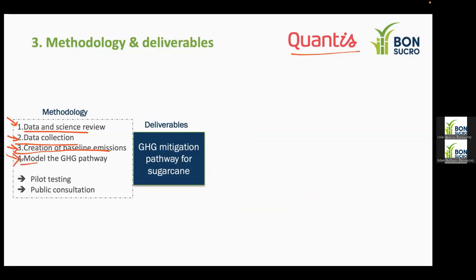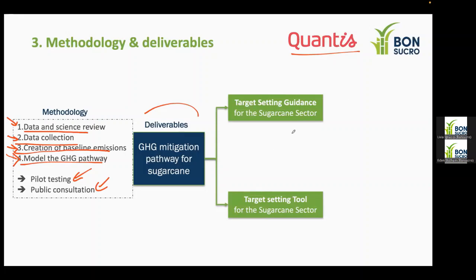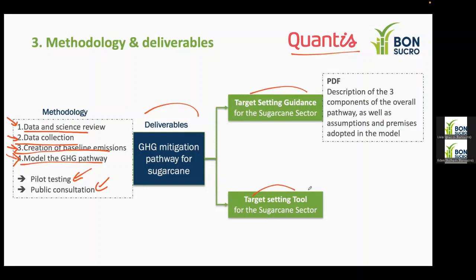The fourth step is modeling the GHG pathway — developing a target GHG mitigation potential for sugarcane aligned with FLAG and deriving the corresponding pathway to be integrated into the tool. We'll also run pilots and one public consultation process so that everyone can interact with the deliverables and provide feedback. Our main deliverable is the pathway, which consists of two components: a target setting guidance document and a target setting tool. The guidance will be a clear, concise methodology document of approximately 5–10 pages.